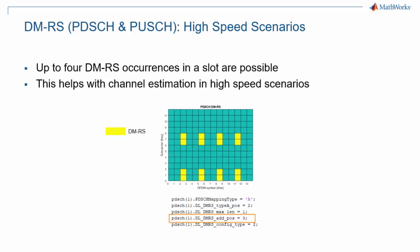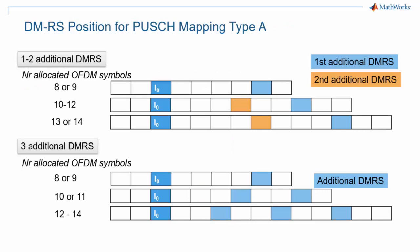Also note that at the 15 kHz subcarrier spacing, one slot is 1 ms, and 4 symbols per slot correspond to the density of cell-reference symbols in LTE. At higher subcarrier spacings, as the slot is shorter, the DMRS density in the time domain is higher. It is important to note that up to 3 additional OFDM symbols per slot with DMRS is only the case for PDSCH or PUSCH allocations that occupy enough symbols in a slot.